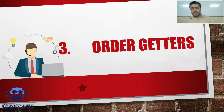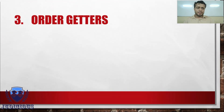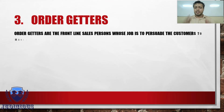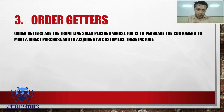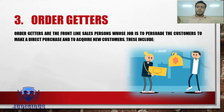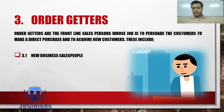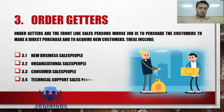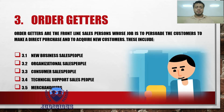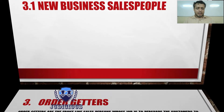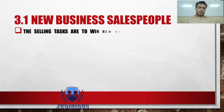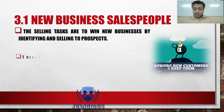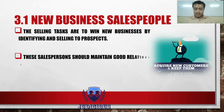The final category is order getters. These are the frontline salespeople whose job is to go and actually persuade the customer to purchase the product from them, and also to acquire new customers. There are five sub-categories: new business salespeople, organizational salespeople, consumer salespeople, technical support salespeople, and merchandisers. For the first sub-category — new business salespeople — their job is to bring in new business, identify prospects, and create new customers.